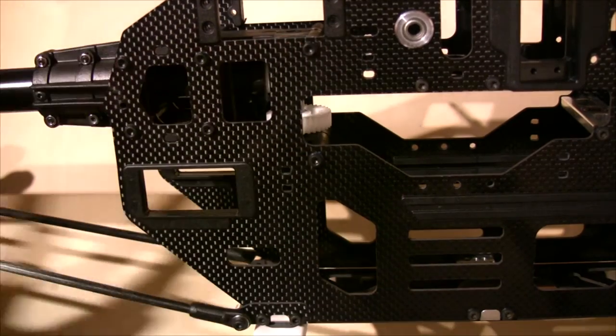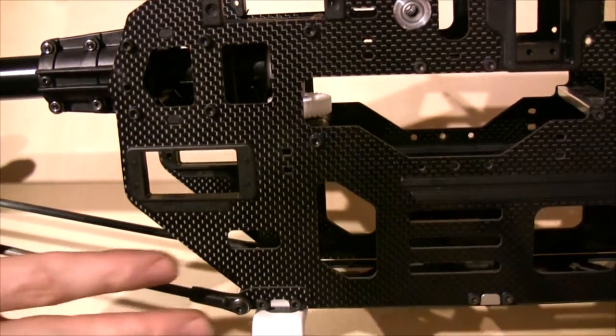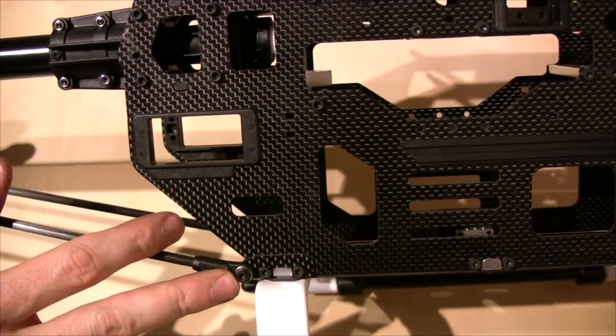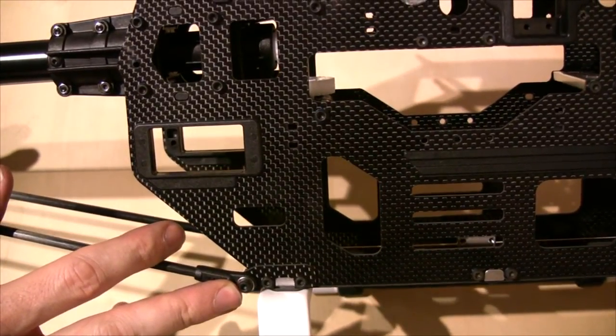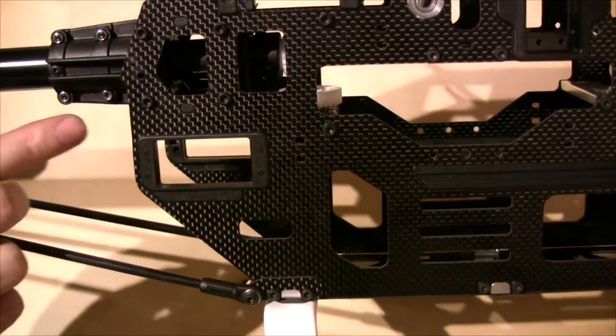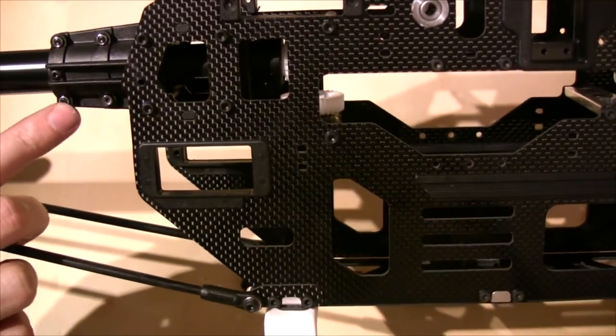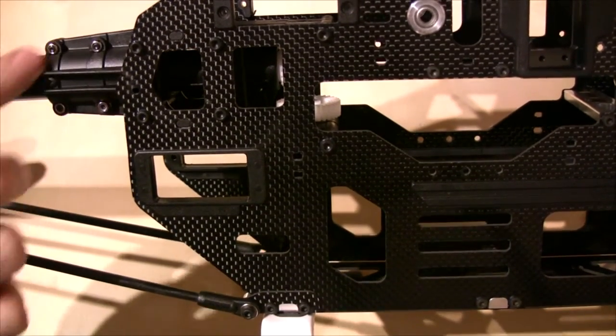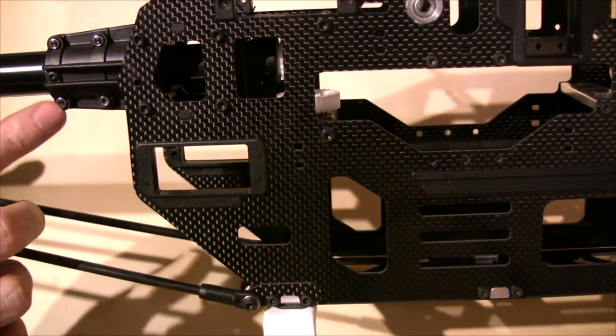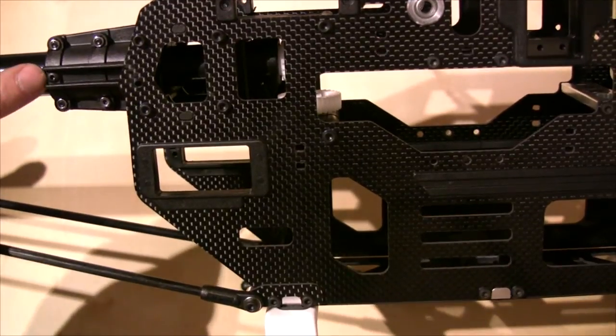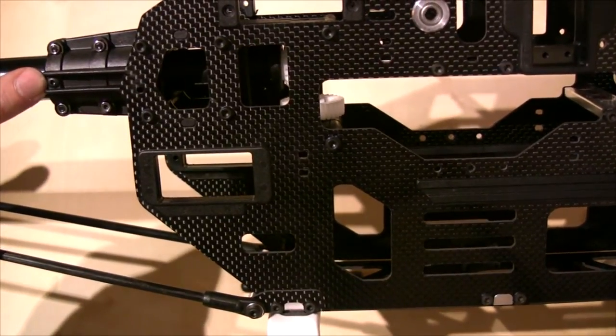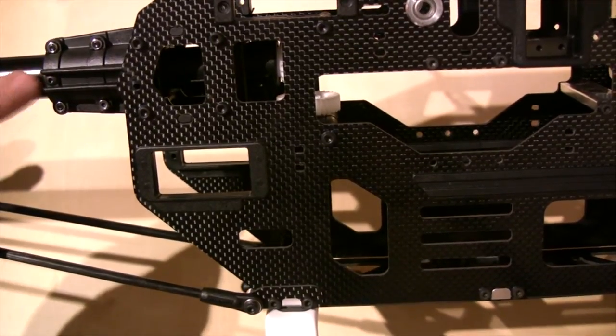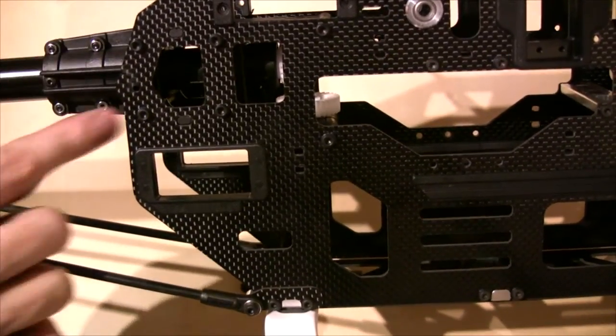We've also got the screws and their nyloc nuts on the boom clamp here in place, and also not forgetting the little round headed screw here which inserts into a hole in the boom. This is pinning the boom so the boom can't exit this clamp. If this clamp for some reason fails, this pin where the screw goes right through the plastic into the hole in the boom should keep that boom in place.